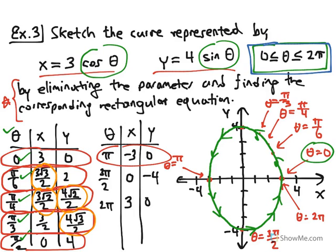This is an ellipse. For better accuracy, you would add values of θ between π/2 and π, between π and 3π/2, and between 3π/2 and 2π. Note the distinction: a 'curve' includes orientation and parameter-value information from the parametric equations, whereas a 'graph' is just the ellipse without that additional information.